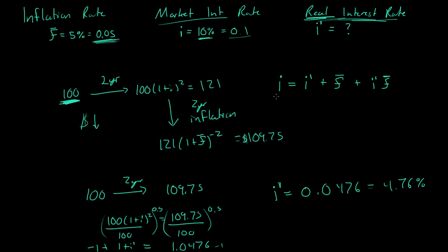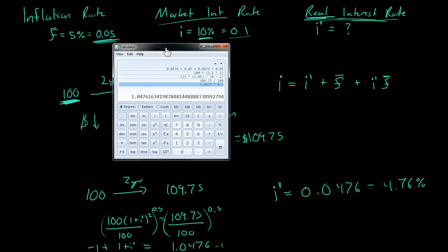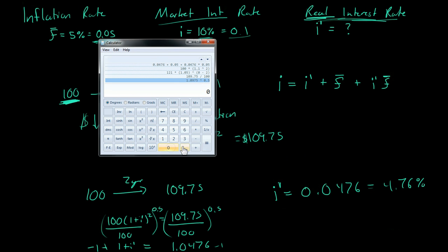And that will give us the market interest rate, if we do it correctly. So we have 0.0476 plus the inflation rate, 0.05,